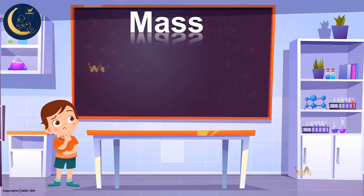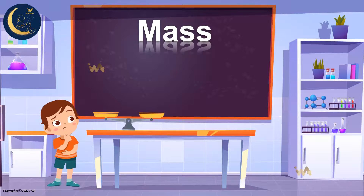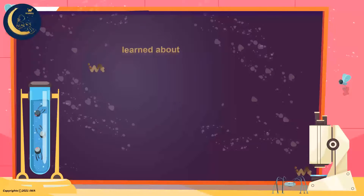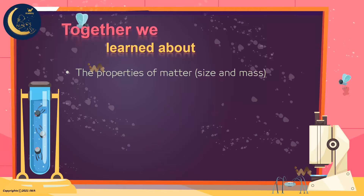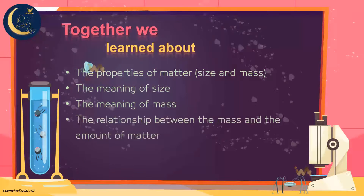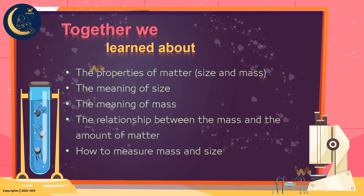Mass is measured using a balance scale, like the glass ball and the clay ball, and likewise the coin and the balloon. Together, we learned about the properties of matter — size and mass — the meaning of size, the meaning of mass, the relationship between mass and the amount of matter, how to measure mass and size, and that air is matter and has mass.